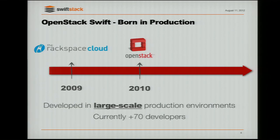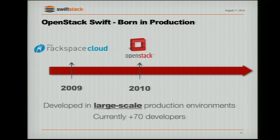Swift and OpenStack. Swift began development in 2009 at Rackspace. Rackspace was building something to be competitive to Amazon S3, and what they came up with was Cloud Files. In 2010, OpenStack was announced and Swift was one of the two projects — Nova and Swift — and that's what became OpenStack.